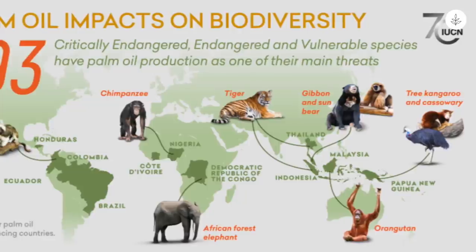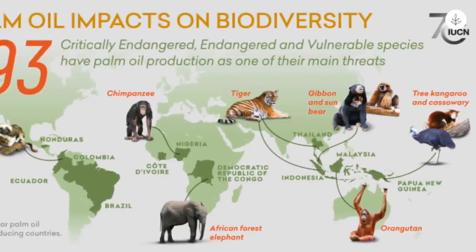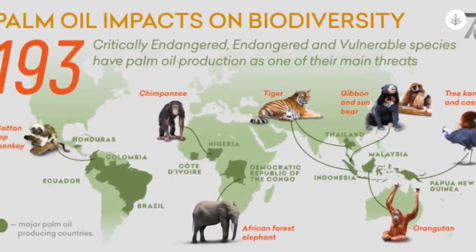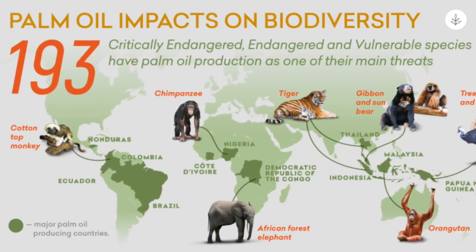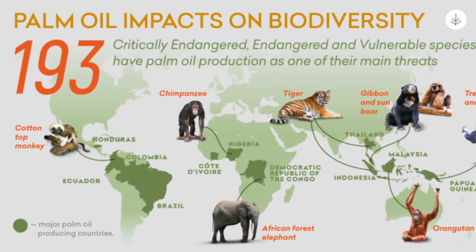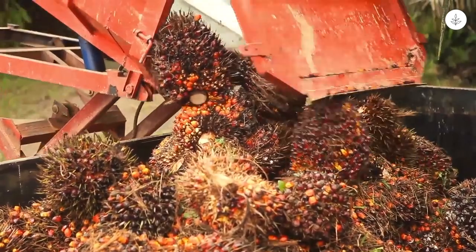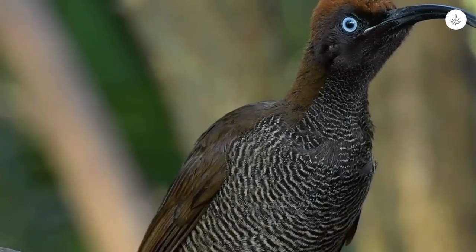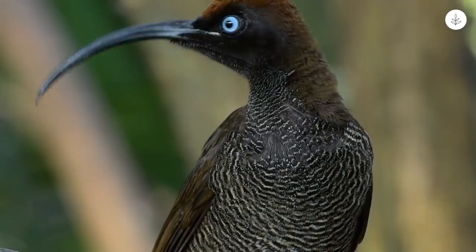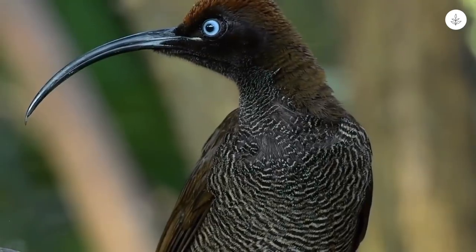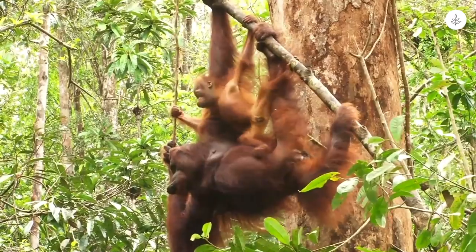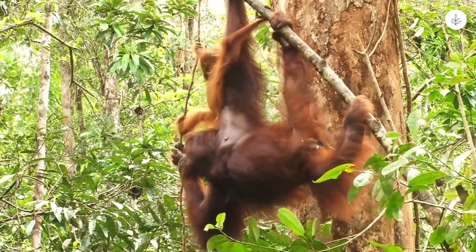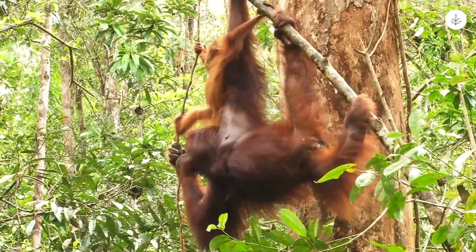According to the International Union for Conservation of Nature's Red List of Threatened Species, palm oil production affects at least 193 threatened species around the world. The IUCN also estimates that the expansion of oil palm could affect 54% of all threatened mammals and 64% of all threatened birds globally. The IUCN explains it also reduces the diversity and abundance of most native species.